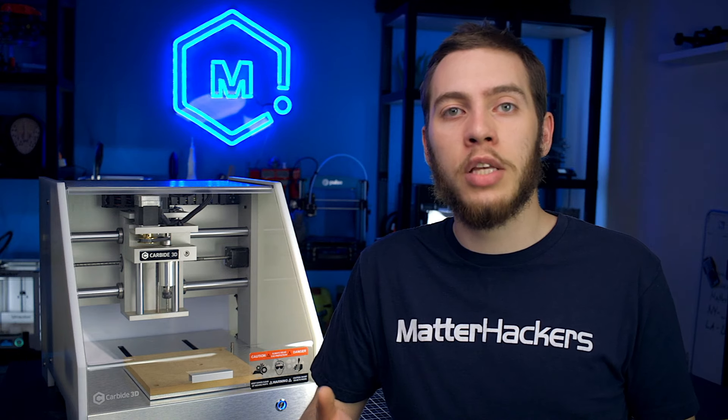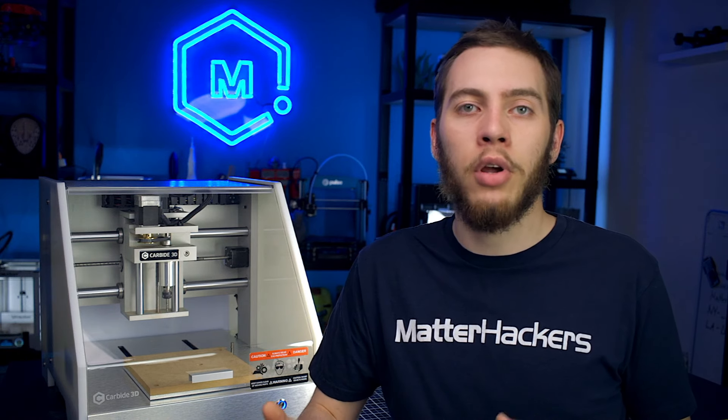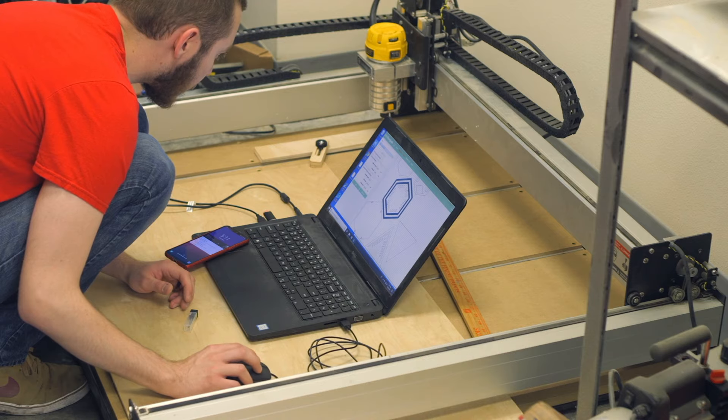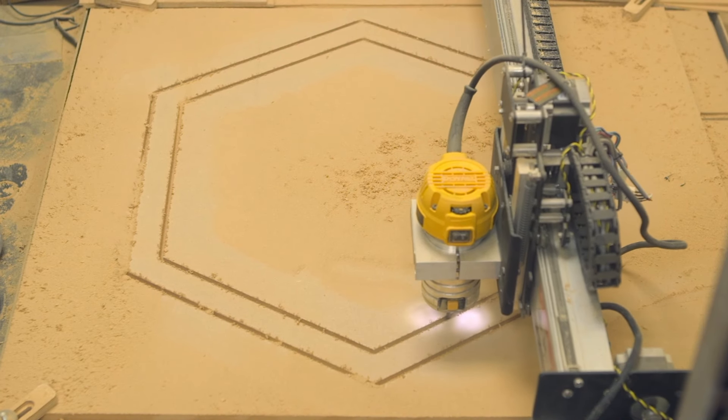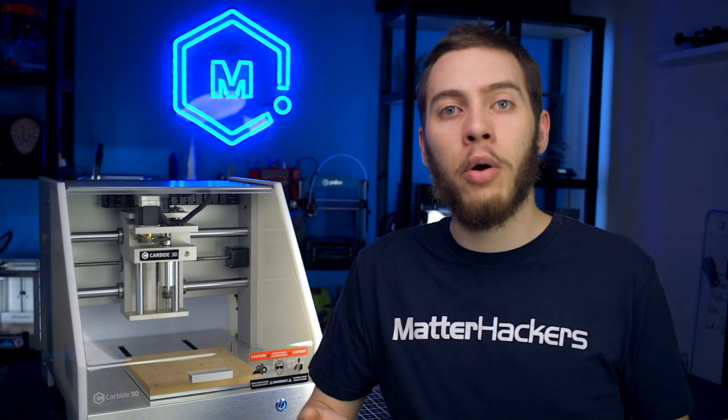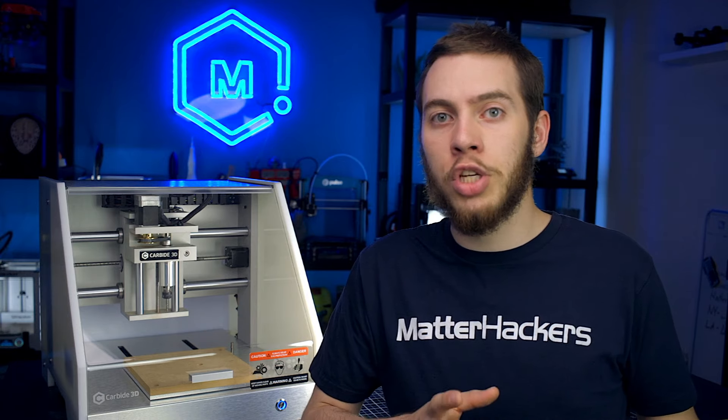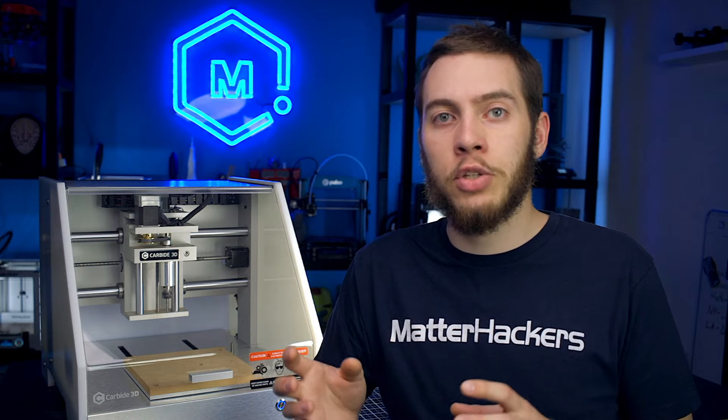The included software with most desktop mills is designed for the first timer. You have basic shapes and design elements to create basic models. But it's all there, you can use it and then export it and start carving it right away. But for the power user, if you already use an industrial-level CAM software or you're well-versed in Fusion 360, you can also use those to create your G-code, export it, and then run it off of these machines as well. You aren't just limited to the proprietary design software, you can export and just run it.